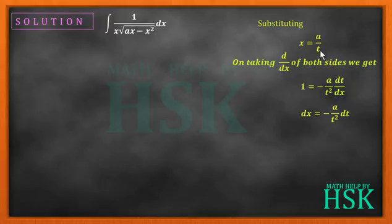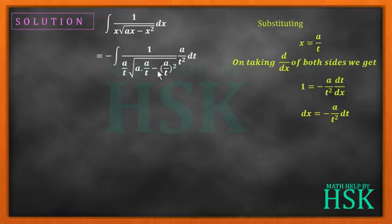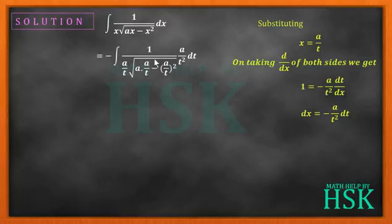Now we perform the substitution: for x we place a/t, and for dx we place minus a upon t squared dt. So we get x = a/t and dx = minus a upon t squared dt. You can see that the two a terms multiply to give a squared, and from the square root sign we also get a factor of a.